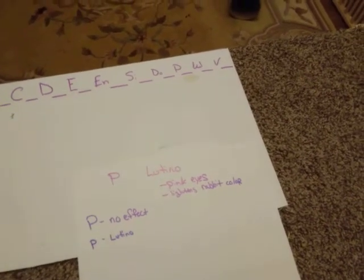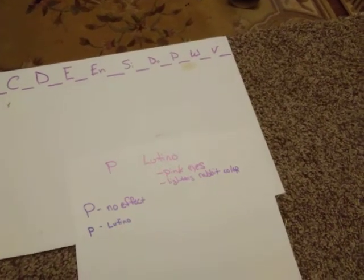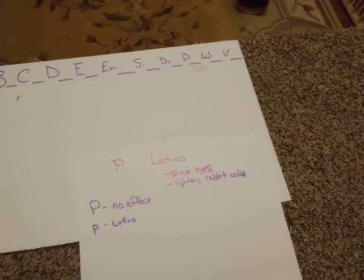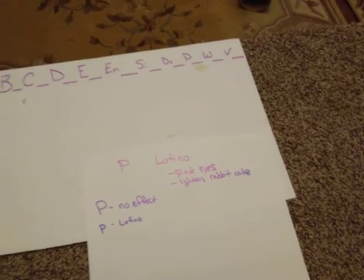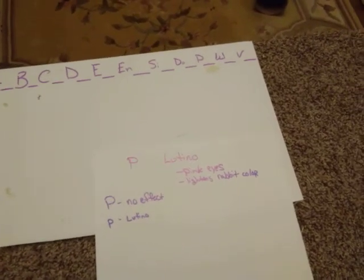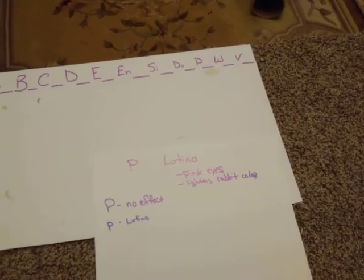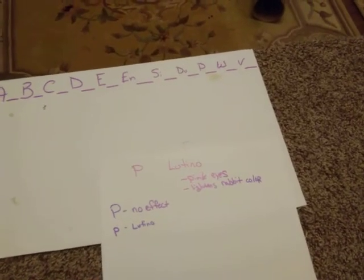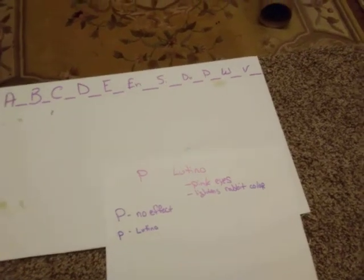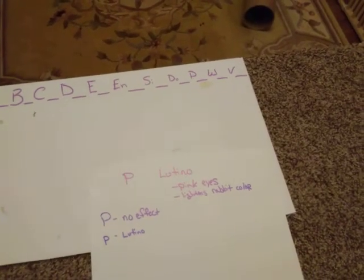That's pretty much the gist of this locus point. There's only two alleles just like in our previous videos. The thing to remember is that you would have to have two copies of the recessive allele to get your Lutino to represent in your rabbit for it to actually be visible.